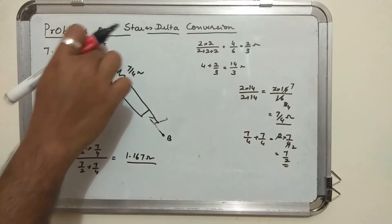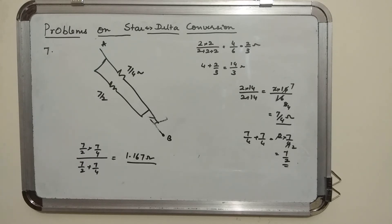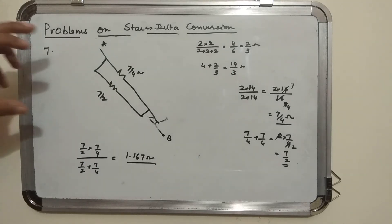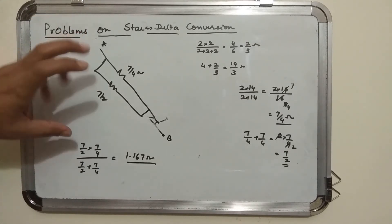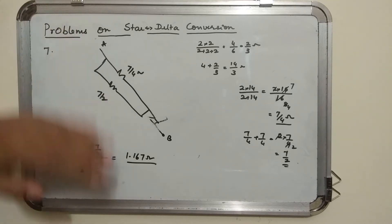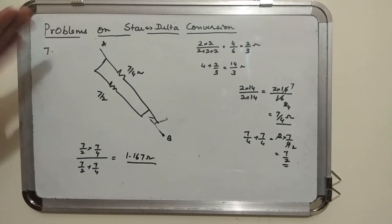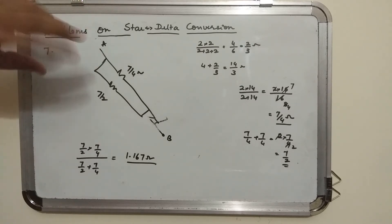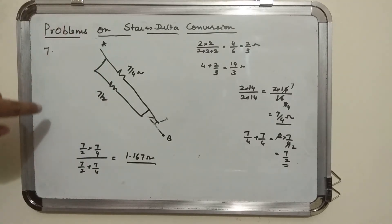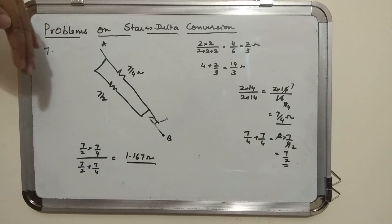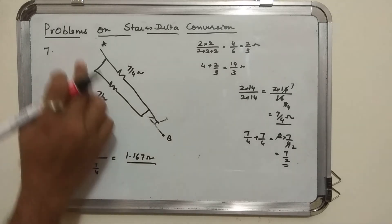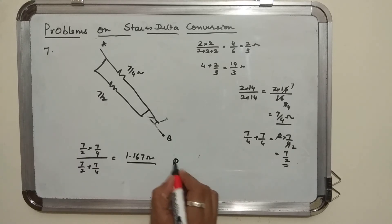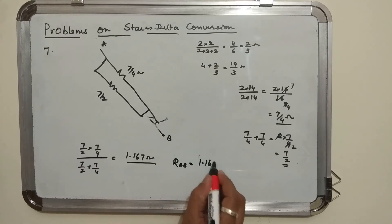So to summarize: we converted the inner delta of 2, 2, 2 ohms into star, got a star connection, then converted that star back into delta, found two parallel resistor combinations, found their series equivalent, then computed the final parallel equivalent. The effective resistance between A and B is 1.167 ohms.